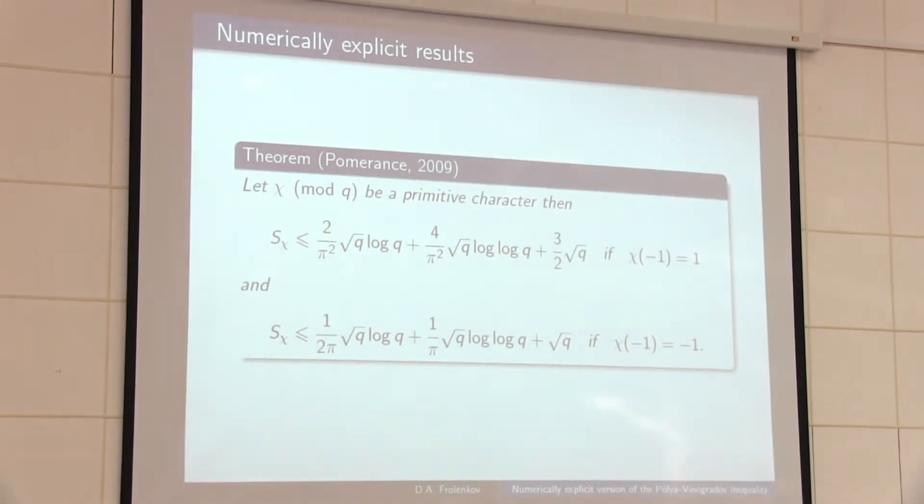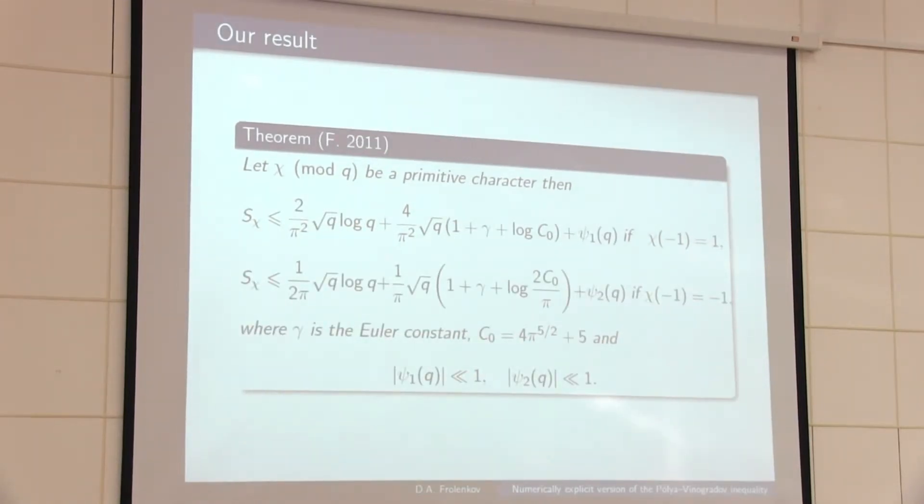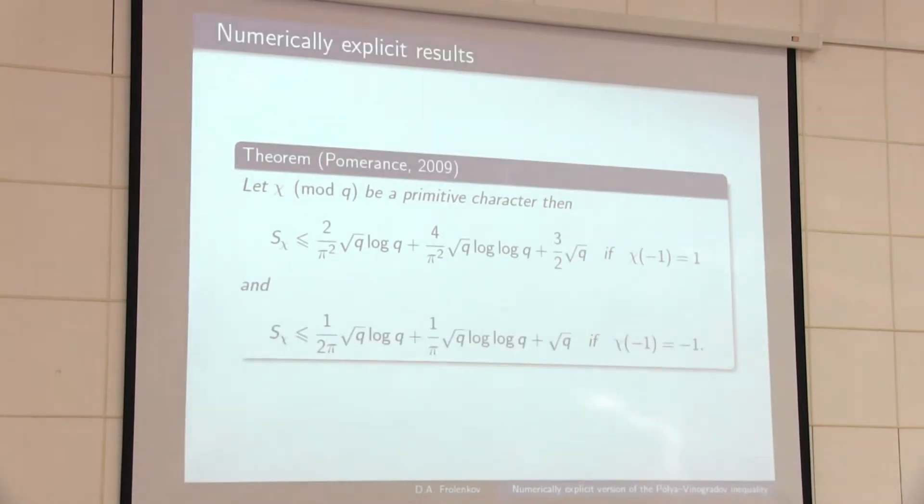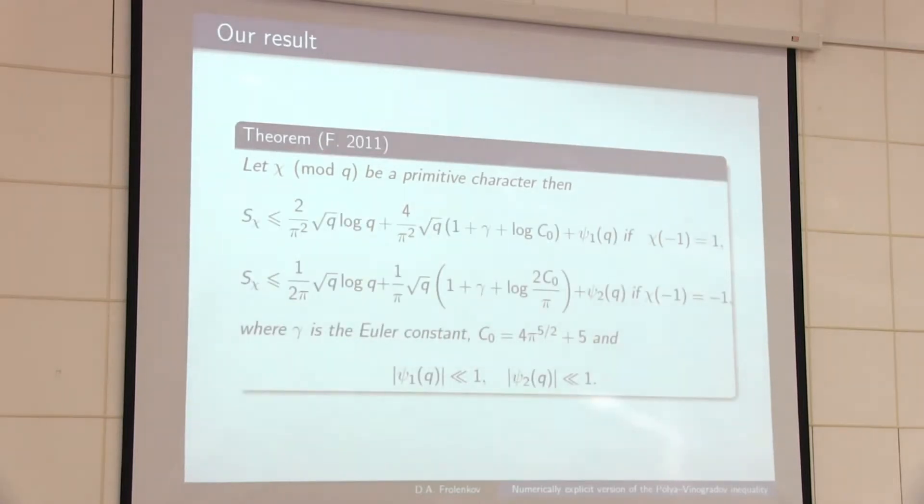The main method that was used is the method of Bykovskii, and it is known that in a lot of problems if you use a modified version of the method, it will prove something better. This idea allows the speaker to improve the result for the constant. The same technique, but we remove the second term and improve the square bounds.